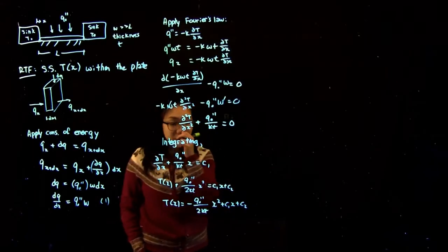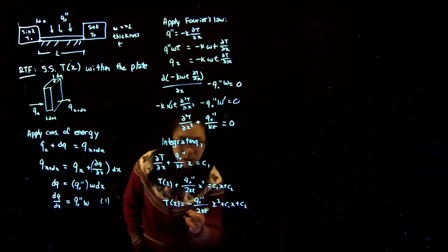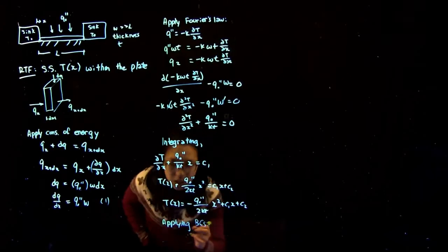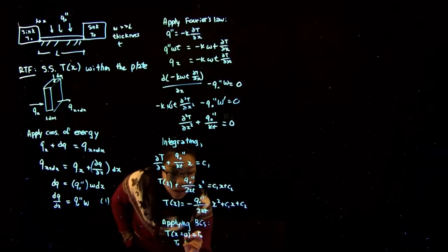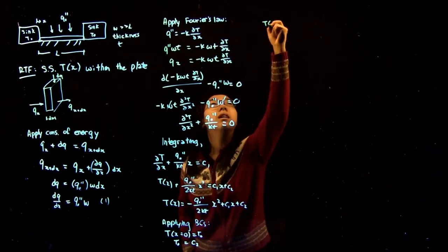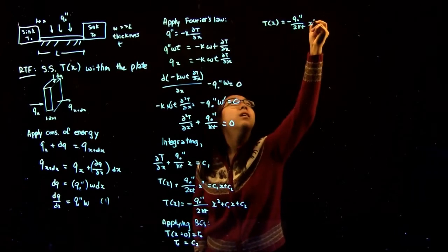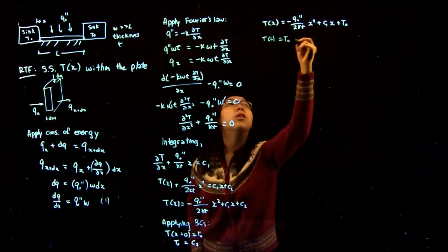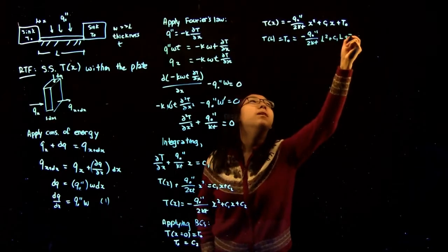We can apply our boundary conditions now because we know the temperature at x equals zero and x equals L is equal to T0. Applying the first boundary condition, T at x equals zero equals T0, substituting that gives us T0 equals C2 quite simply. Then we write T(x) equals minus Q0 over 2Kt times x² plus C1x plus T0, and we know that T(L) equals T0, giving us minus Q0 over 2Kt times L² plus C1L plus T0.